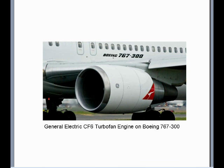Here's an example of a turbofan jet engine on a Boeing 767-300, specifically the General Electric CF-6.